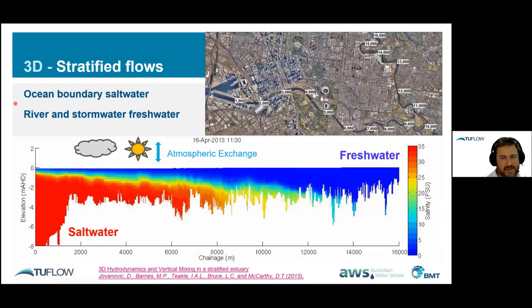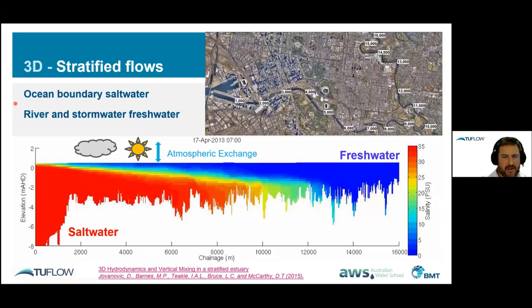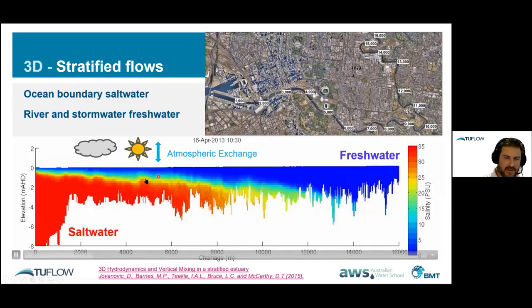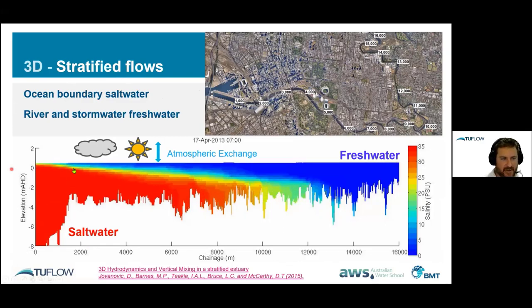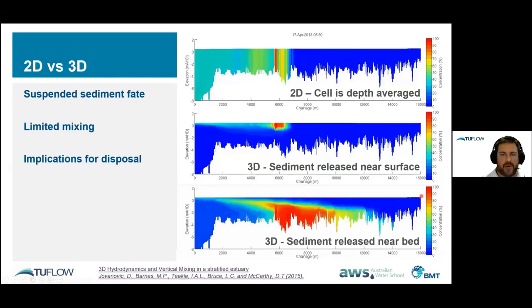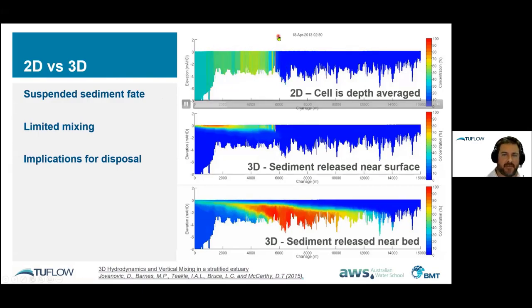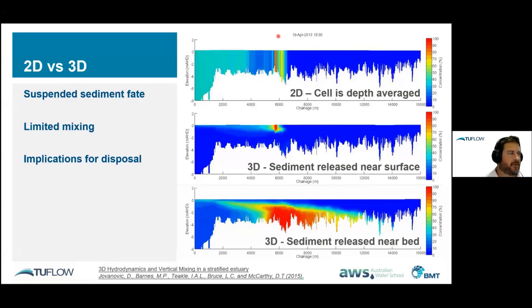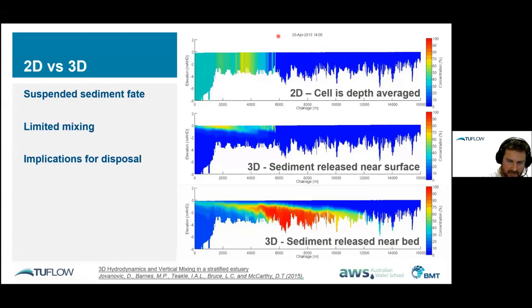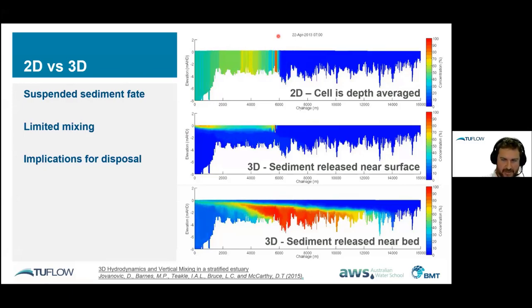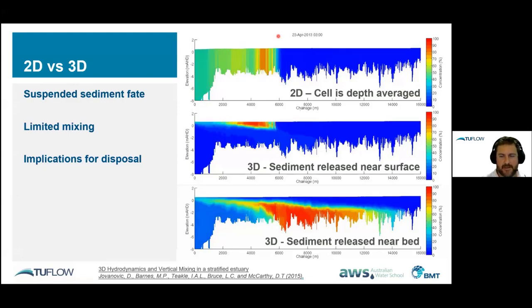Another three-dimensional behaviour is density. In a salt wedge estuary, saltwater comes in from the ocean and freshwater comes off the catchment, with very little mixing between the two layers. If suspended sediment from waste is placed into a 2D model at the surface it moves downstream, but if placed near the bed the material actually moves upstream and continues to build up — quite different answers depending on how the hydraulics are represented.